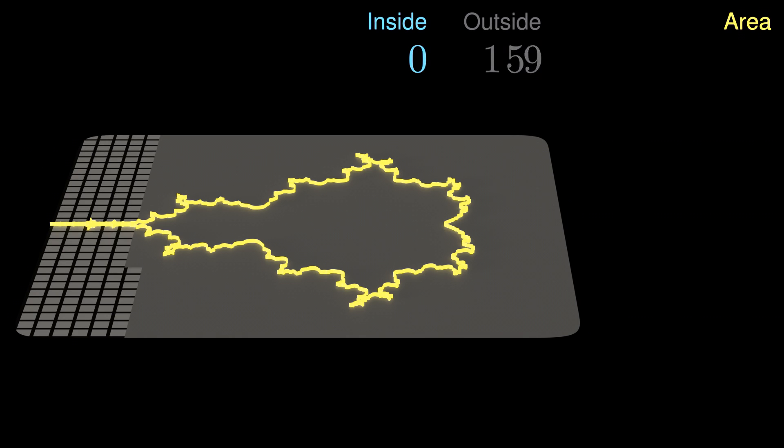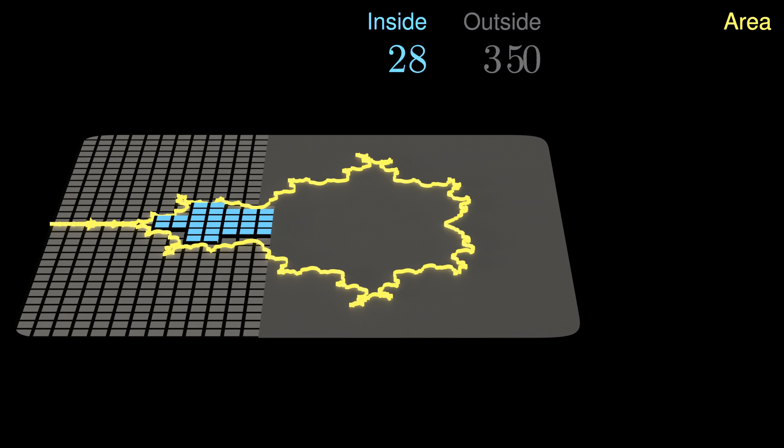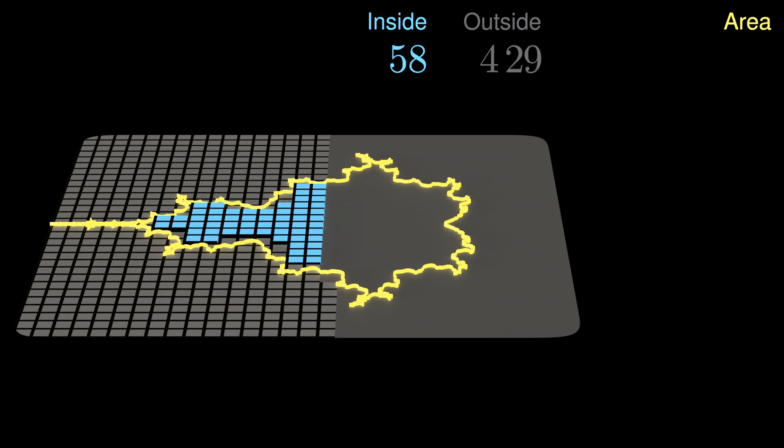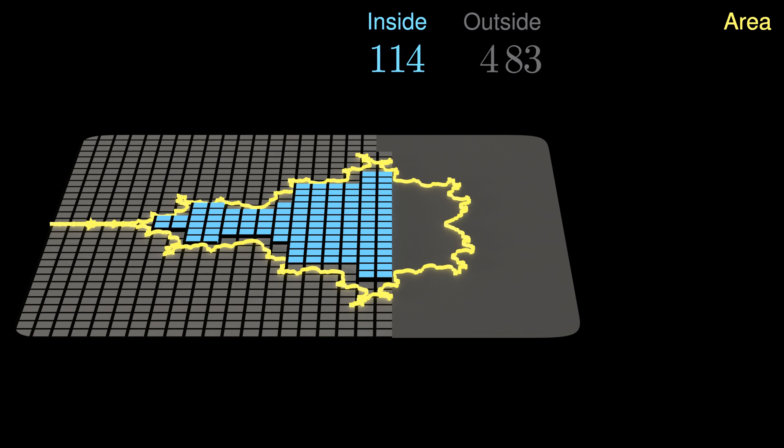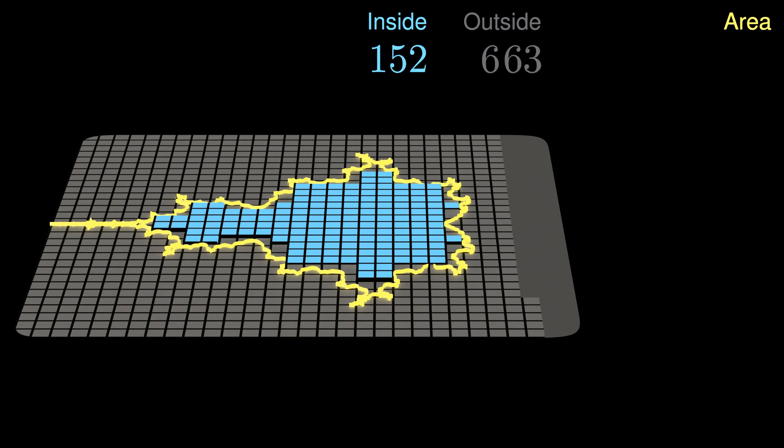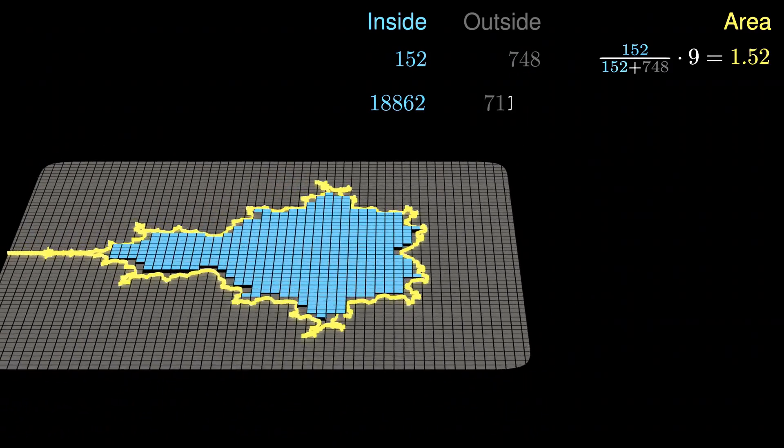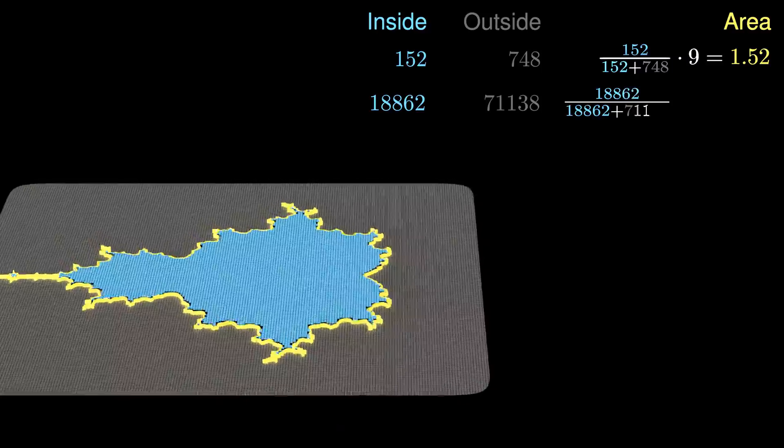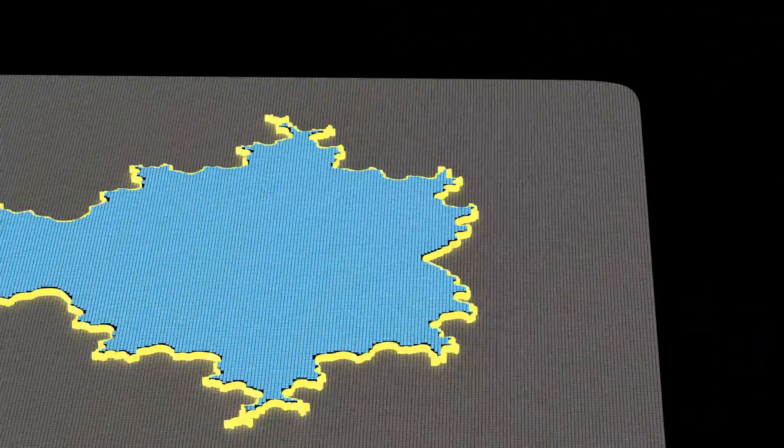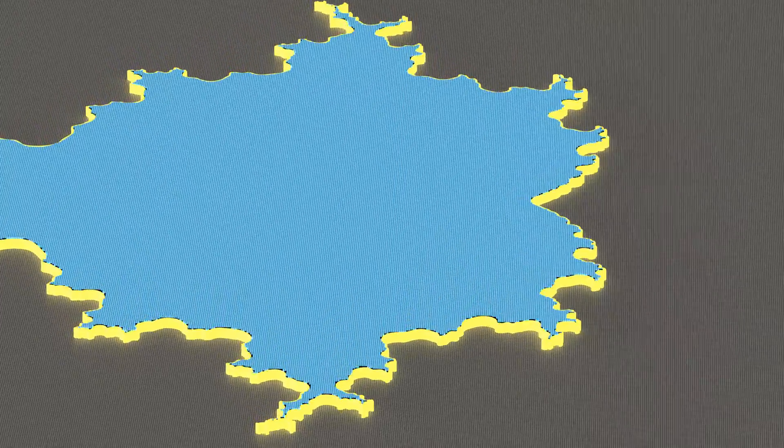To confirm the result with a different method, we just count the pixels inside the curve. In a low resolution scan, we find 152 of 900 pixels inside, leading to an area estimate of 1.52. When the resolution is increased, we get better estimates, roughly converging to 1.96. The weighted sum of the 2000 coefficients yields the same result.